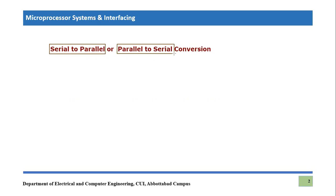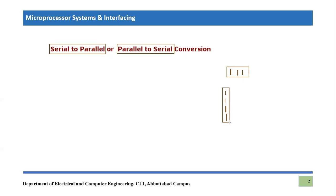What is parallel or serial at this stage — serial means you are sending bit by bit information. Serial communication means you are transferring information bit by bit: one bit transfer, another bit transfer, then another bit transfer. This is called serial communication or serial transmission. There is another way in which you can transfer multiple bits at a time — this is called parallel transmission.